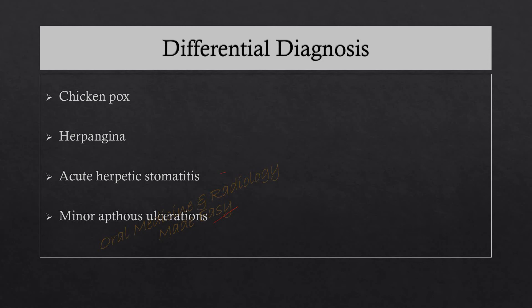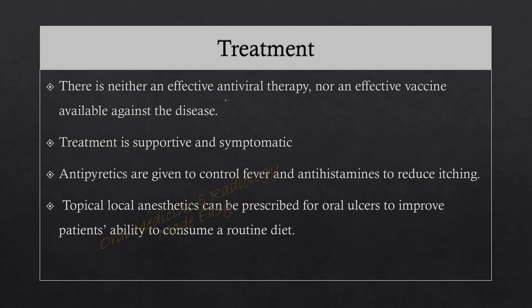In chickenpox, involvement of the thick skin of the palms and soles is less common compared to HFMD. Herpangina is also a viral disease but predominantly involves the posterior one-third of the oral cavity, whereas HFMD involves other parts. Acute herpetic stomatitis more commonly affects the gingiva, whereas HFMD mainly affects other parts of the oral cavity. Minor aphthous ulceration does not involve multiple sites like the hands and feet, helping to differentiate it from HFMD.